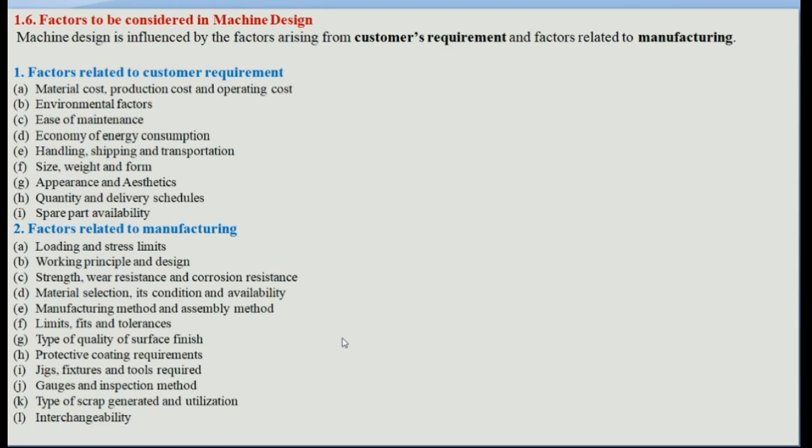Other factors related to the manufacturing facility include: loading and stress limits, working principle design, strength, wear resistance and corrosion resistance, material selection, manufacturing method, limits, fits and tolerances, quality of surface finish, protective coating requirements, jigs, fixtures, tools, gauges, inspection methods, types of scrap generated and its utilization, and interchangeability.